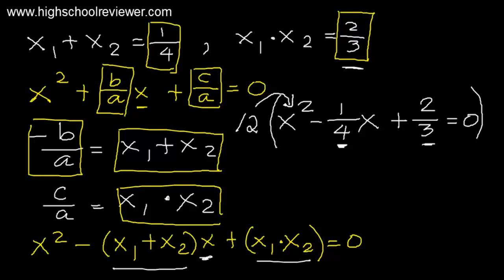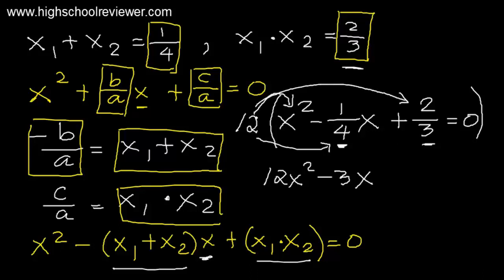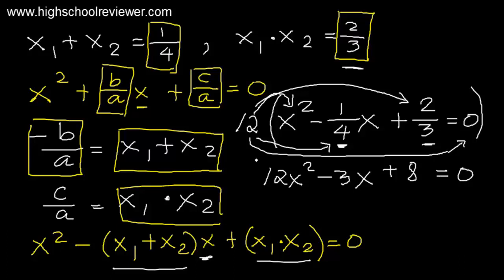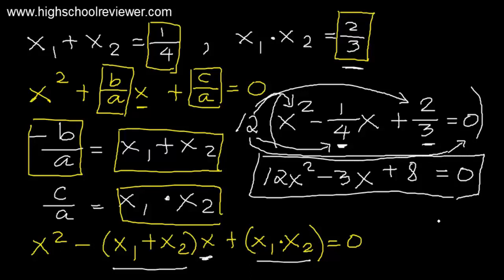Multiplying through by 12: 12 times x squared gives 12x squared; 12 times negative 1 over 4 gives minus 3, so minus 3x; and 12 times 2 over 3: 12 divided by 3 is 4, and 4 times 2 is 8, so plus 8. Therefore, 12x squared minus 3x plus 8 equals 0 is our final answer.